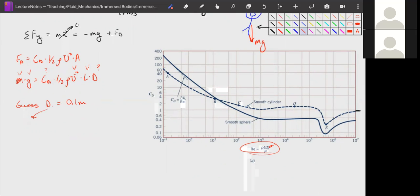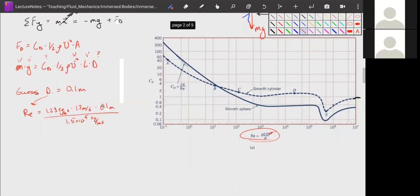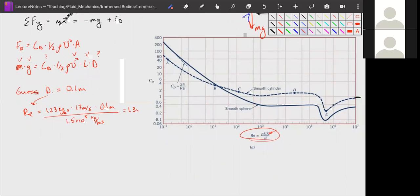We guess the diameter. That leads us to our Reynolds number. Our Reynolds number is going to be equal to 1.23 kilograms per meter cubed times our velocity, which is 17 meters per second, times our diameter, which is 0.1 meters, divided by 1.5 times 10 to the fifth kilograms per meter second. We get a Reynolds number of 1.3 times 10 to the fifth.